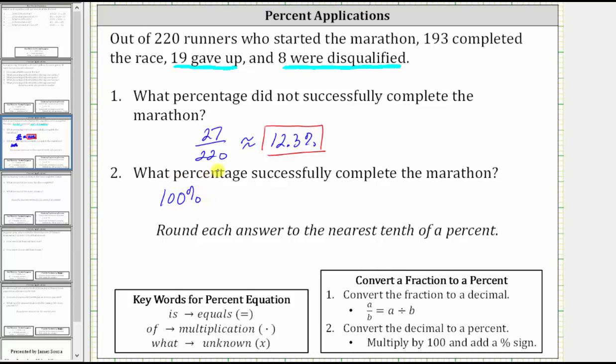and subtract the percent that did not complete successfully, which is 12.3%. 100% minus 12.3% equals 87.7%.